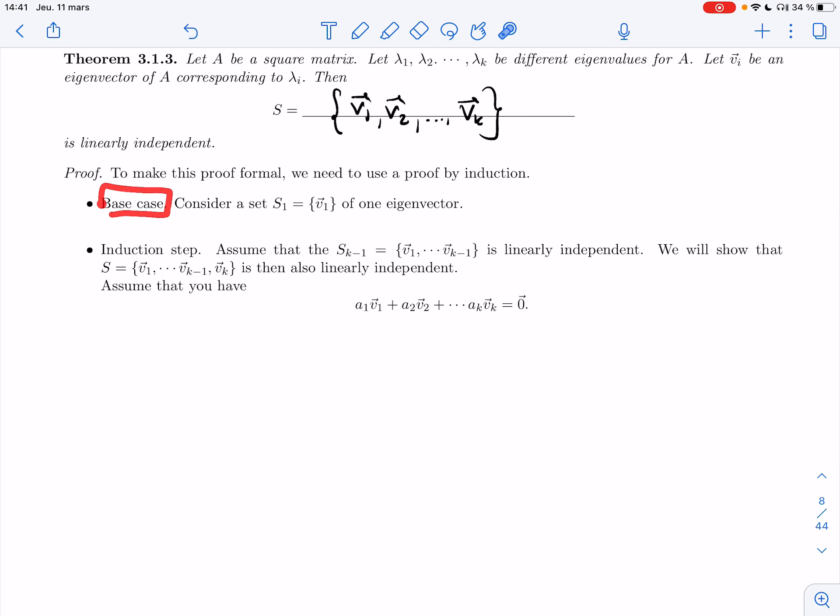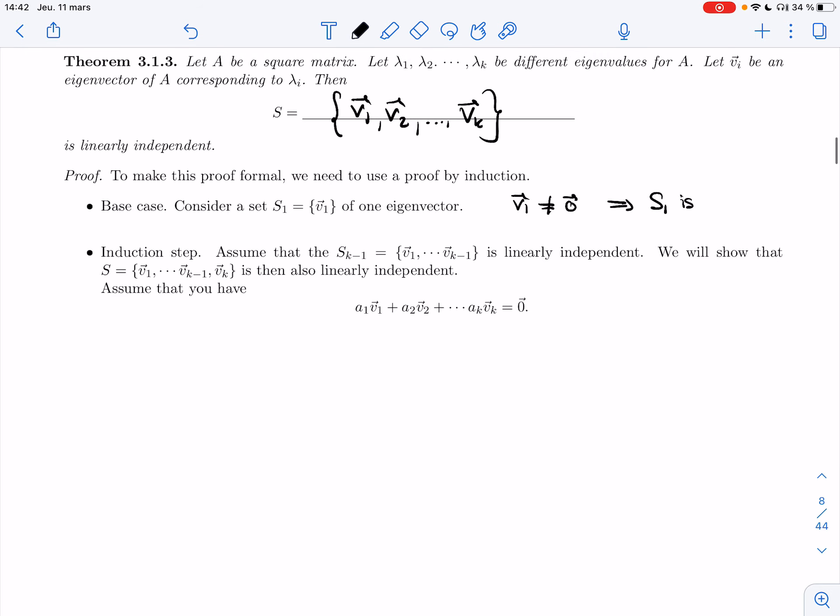Base case, I'm going to look at a set of one vector. So it's one eigenvector, but the eigenvector is not zero. Because eigenvectors are not zero, and so that means that set is linearly independent.